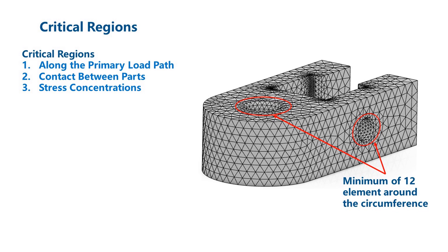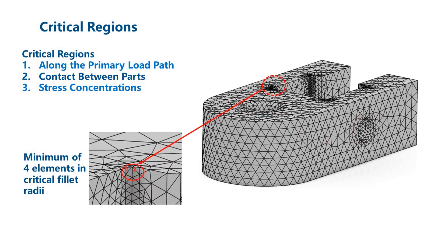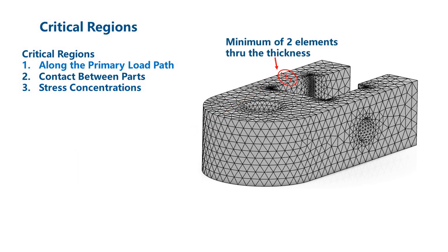A good practice is to use a minimum of 12 elements around the circumference of a critical hole. There are small fillets in the slot. These regions are along the primary load path and are also a stress concentration. Generally, we want at least four elements in a fillet like this. We currently only have two elements, so we will likely need to refine the mesh in this region. The side of the lug behaves like a beam and is along the primary load path. Generally, we want to have at least two to three elements through the thickness of a feature like this.